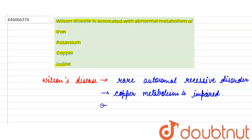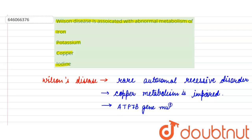This disease is caused due to mutations in the ATP7B gene, in which excessive deposition of copper in the liver, brain, and other tissues occurs.